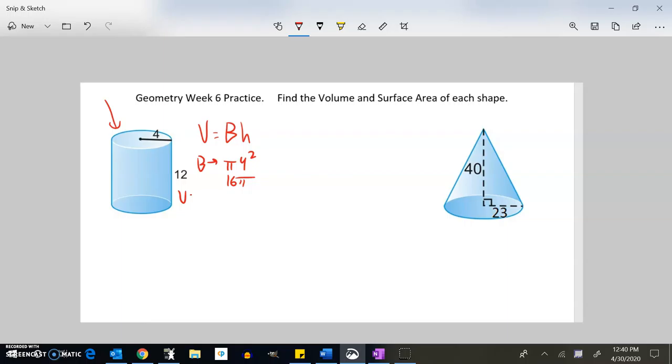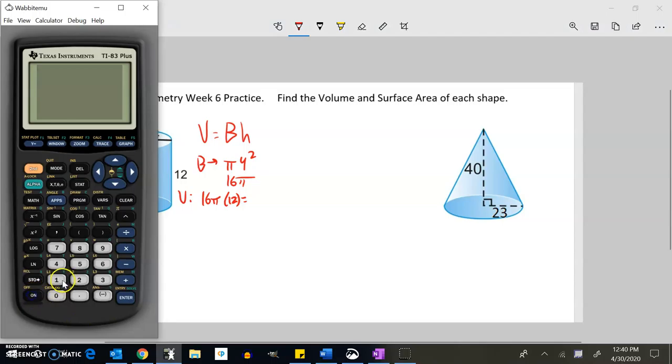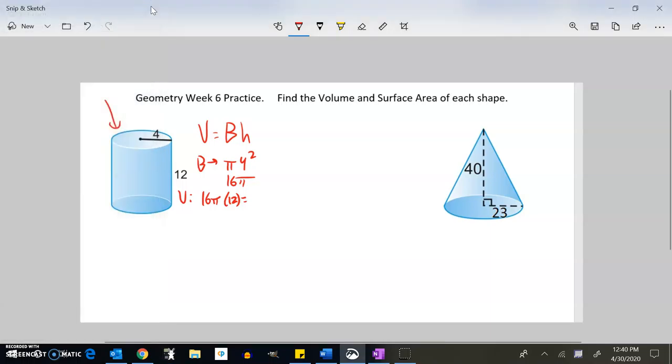The volume is that area of the base times the height. The height is 12, so it's 16 times π times 12. I'll use my calculator: 16 times π times 12, and that's about 603.19. I'm going to round that up to 603.19, and that's going to be units cubed because it's a measure of volume.